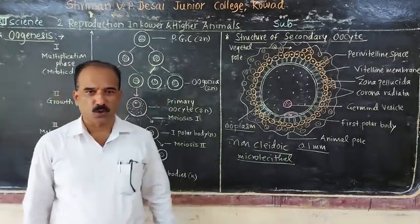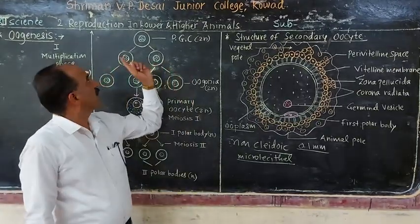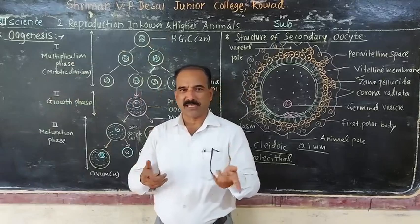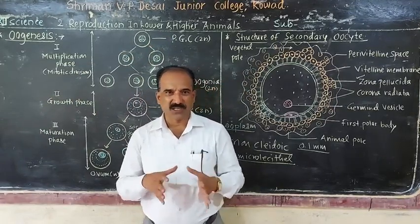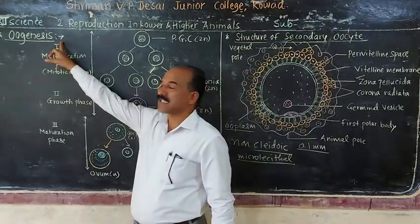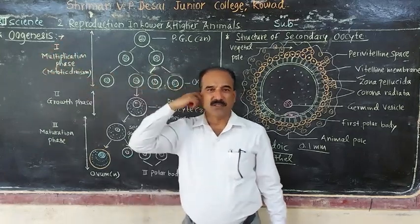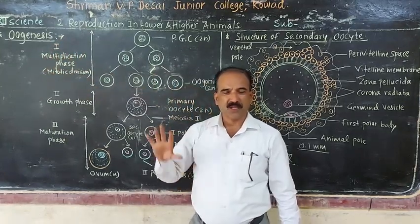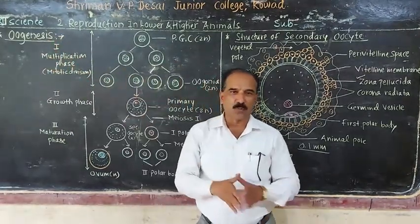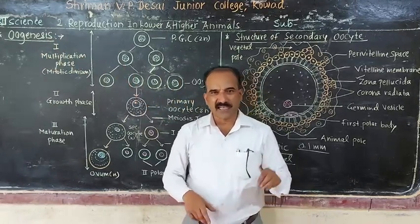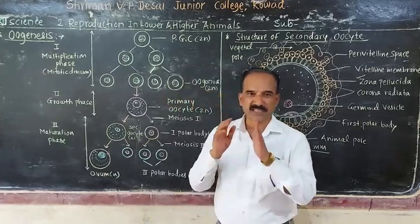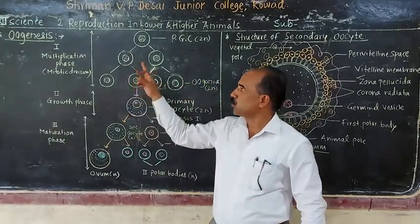Hello students, good morning everybody. In the topic reproduction in lower and higher animals, we are studying about gametogenesis. Last time we discussed spermatogenesis; now we are discussing oogenesis. Oogenesis is the process of formation of the female gamete — that is, the egg or ovum — from the primary germinal cells.